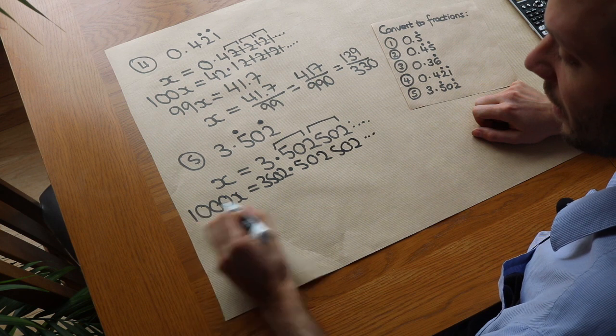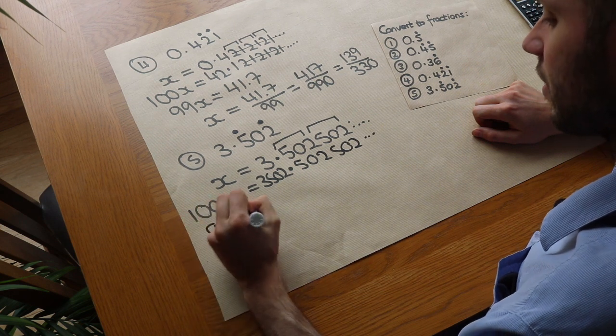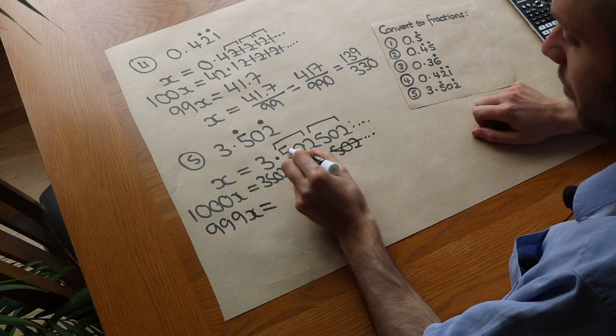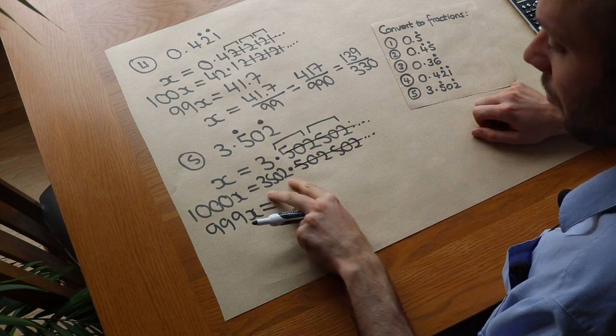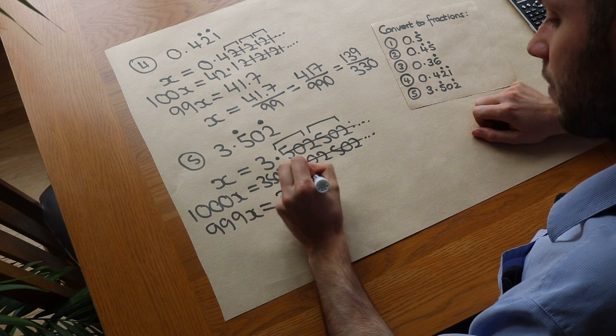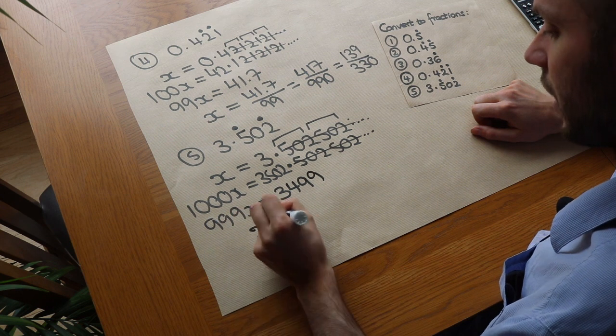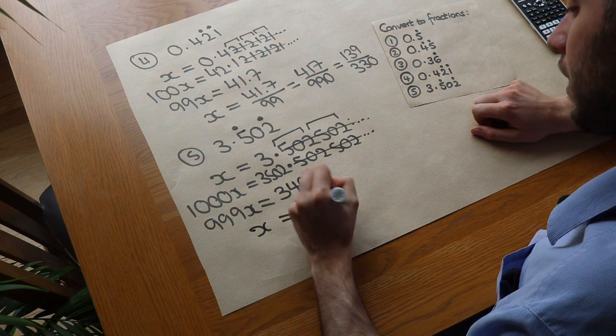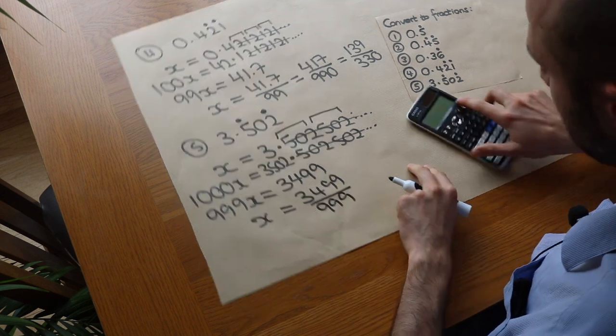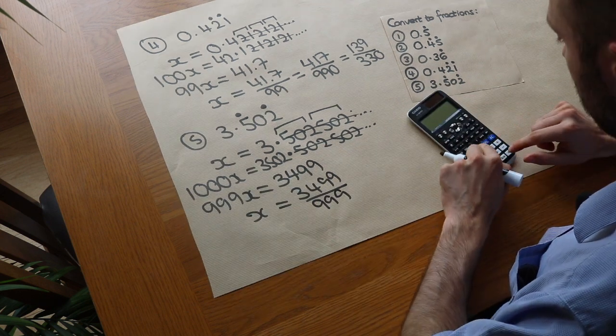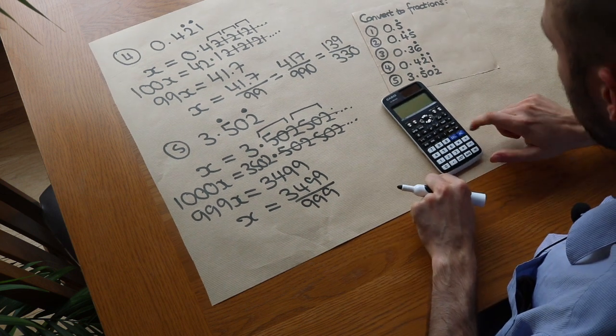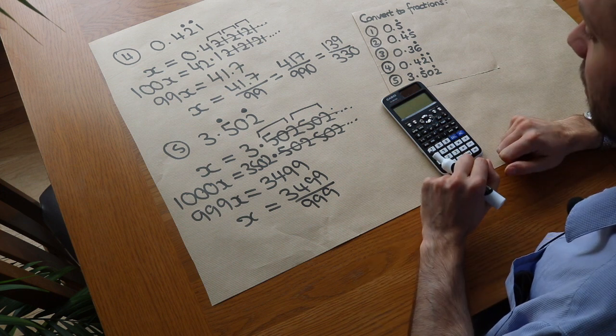So when we subtract these, 1000x minus x is 999x. And then subtracting these gets rid of everything after the decimal point in this case because they're the same. And 3,502 minus 3 is 3,499. So divide by 999 and we get 3,499 divided by 999. And I'm not sure that simplifies. Let's just check 3,499 divided by 999. And no it doesn't. So in fact that's the simplest form. And if I press SD, yes it gives me the right answer.